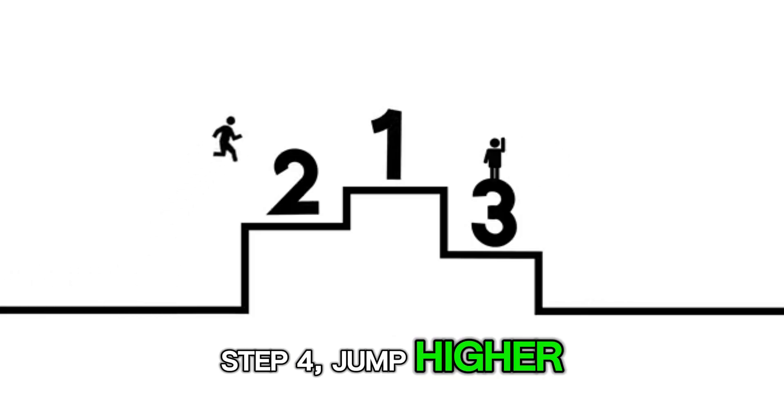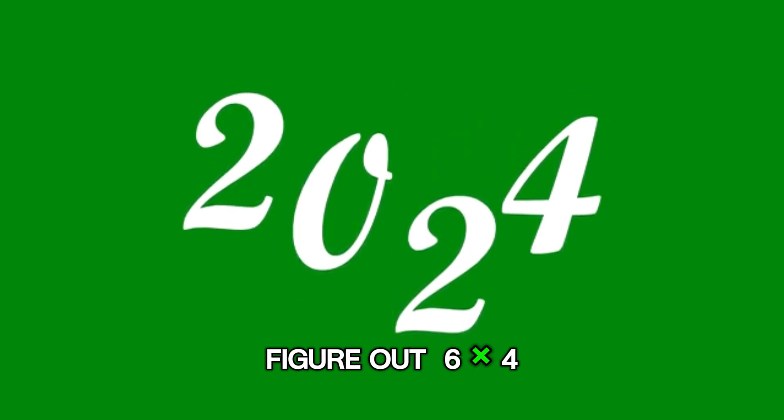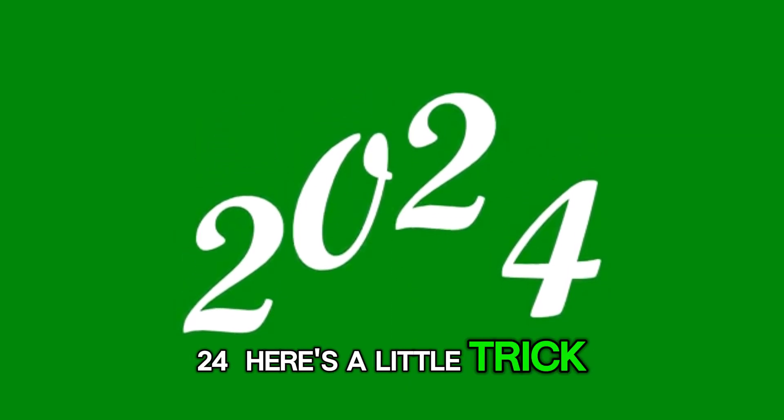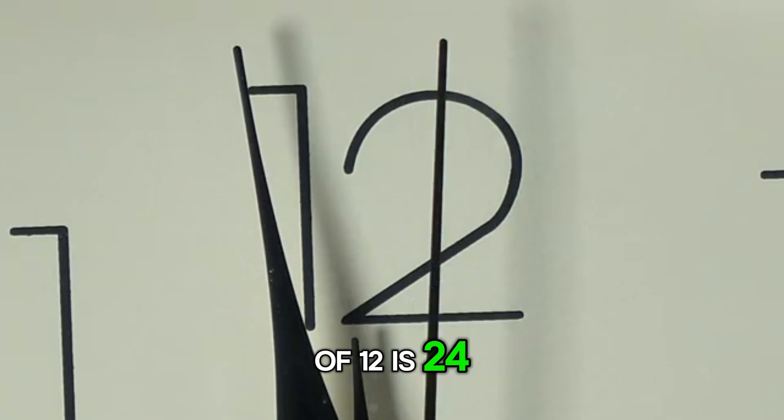Step 4. Jump higher. Let's continue. Now we need to figure out 6 times 4 equals 24. Here's a little trick. The answer is double of 12. Double of 12 is 24.